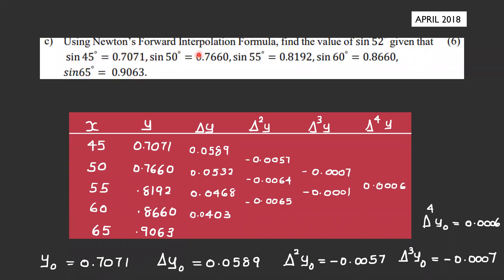Next question: Using Newton's forward interpolation formula, find sin(52°) given sin(45°) = 0.7071, sin(50°) = 0.7660, sin(55°) = 0.8192, sin(60°) = 0.8660, sin(65°) = 0.9063. The x values are 45, 50, 55, 60, 65 and the corresponding y values are 0.7071, 0.7660, 0.8192, 0.8660, 0.9063.